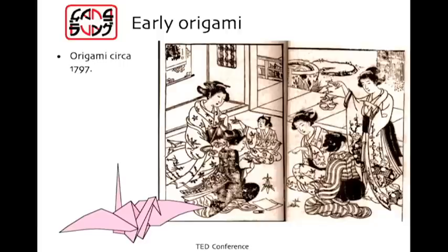Now, it's very old. This is a plate from 1797. It shows these women playing with these toys. If you look close, it's this shape called a crane. Every Japanese kid learns how to fold that crane. So this art has been around for hundreds of years, and you would think something that's been around that long, so restrictive, folding only, everything that could be done has been done a long time ago.